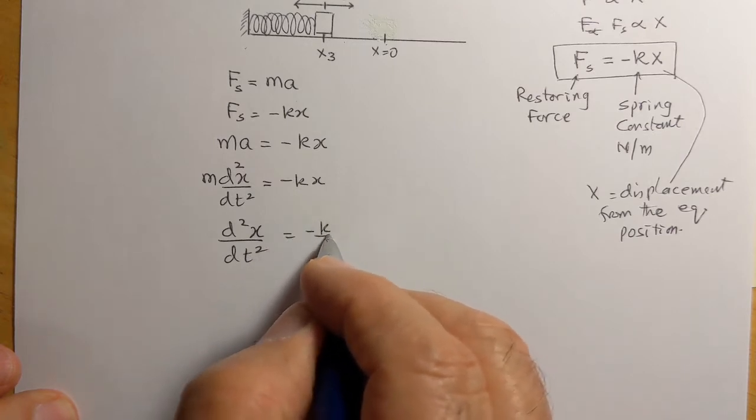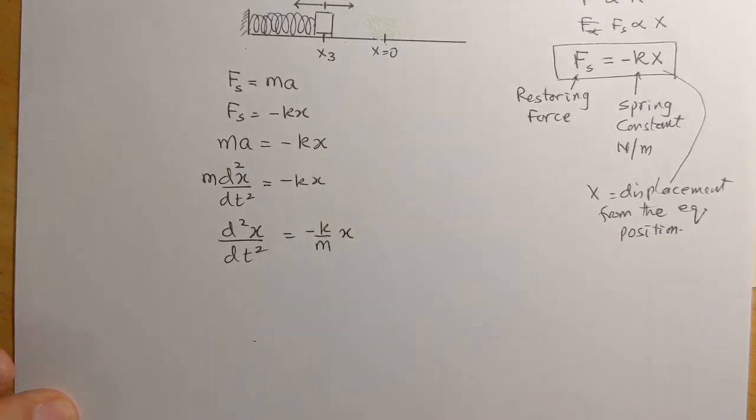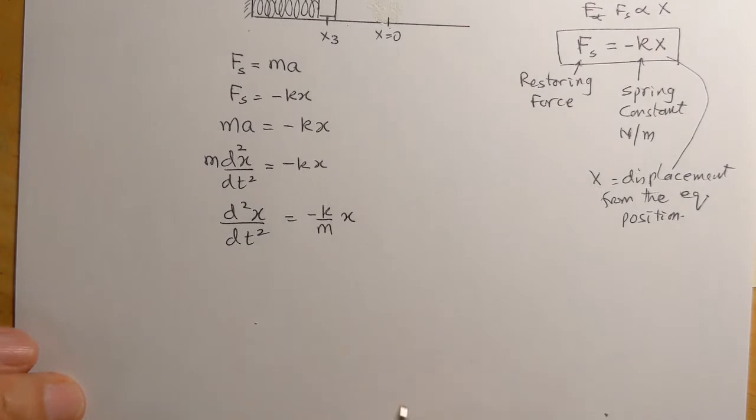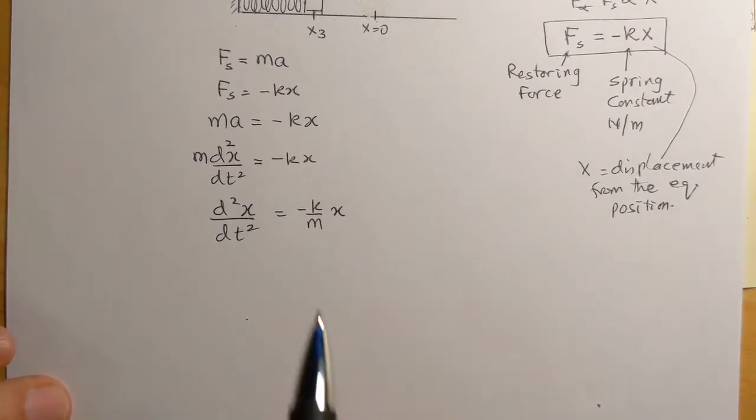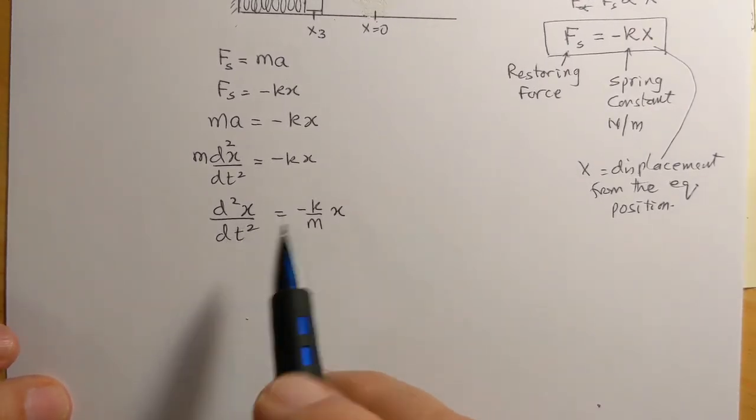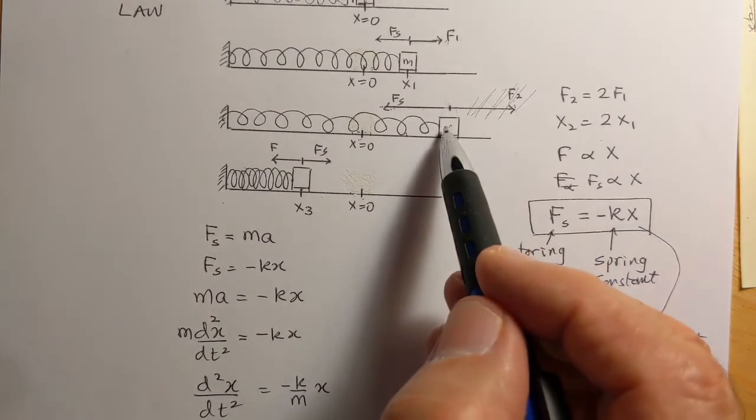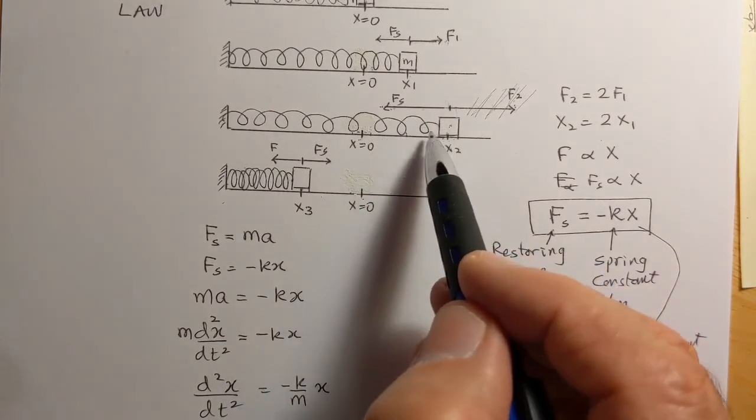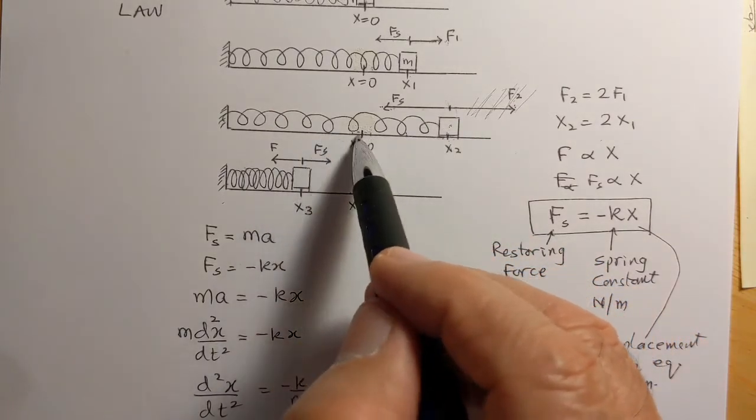equals -k/m x. And now we want to solve this differential equation to get x as a function of time, so we'll see as it's pulling it inwards where will it be at different intervals